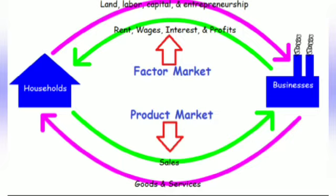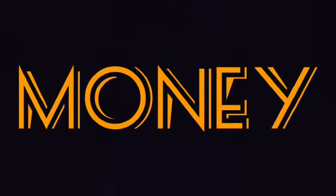For example, the clothes market and car market are examples of the goods market. In the labor market, firms are the buyers and households are the sellers of labor service — these come under the factor market.